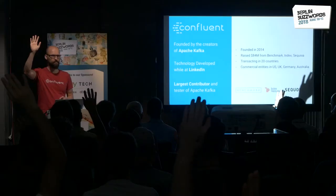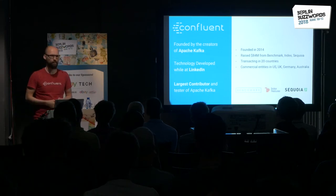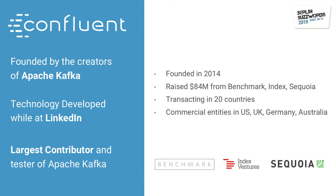A few words about myself. I work at Confluent — for the few of you who don't know, Confluent is the company founded by the creators of Apache Kafka. We're based in the United States; I'm actually based in Switzerland, working remotely. I joined Confluent about three years ago on the engineering team, but since then have moved to product management and am now responsible for stream processing with Kafka and Confluent — specifically Kafka Streams, which I talked about last year, and KSQL, which I'll cover today.